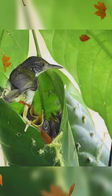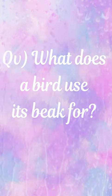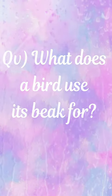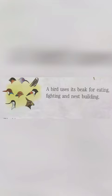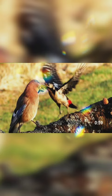The last question is: what does a bird use its beak for? The answer is on page number 48: a bird uses its beak for eating, fighting, and nest building. Note that we use 'its' when talking about animals or things, just as we use 'his' or 'her' for boys or girls. So: a bird uses its beak for eating, fighting, and nest building.